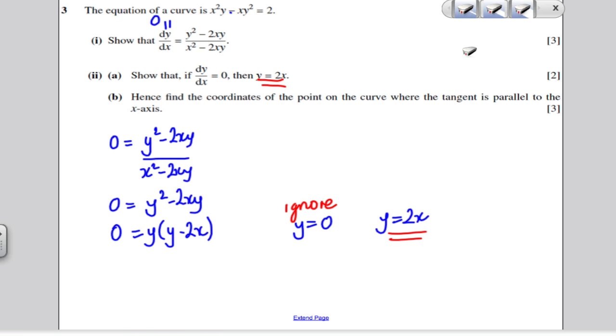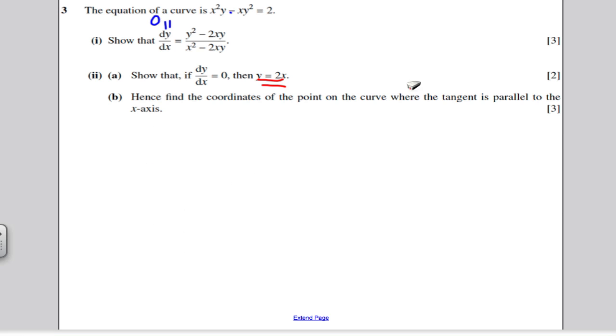Lastly, we're on part b. It says, hence, find the coordinates on the curve where the tangent is parallel to the x-axis. Now, the tangent parallel to the x-axis, if you've got a curve, just think about it. If the tangent is parallel to the x-axis, it's effectively telling you that the gradient is 0. dy by dx, the gradient function at that point, is 0. So, we've already shown that if dy by dx is 0, then y must equal 2x.